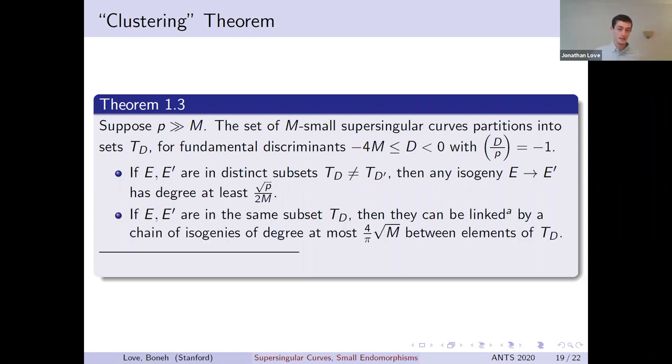One minor technical point is that this clustering only holds if a curve over F_p² and its conjugate are identified. So one may need to replace the final curve in this chain with its conjugate in order for the result to hold.